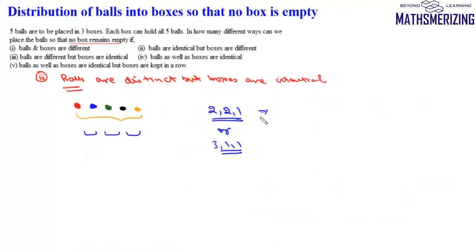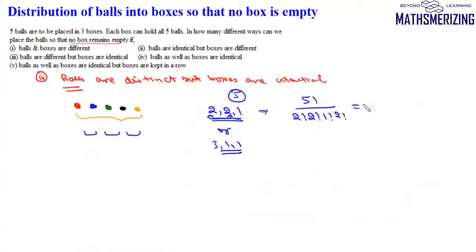This question is actually nothing but distribution of objects into identical groups. Now how do we distribute five objects in a group of 2, 2, and 1? We know that this can be done in 5! divided by (2! × 2! × 1!), and since we have these two equal-sized groups, we divide by 2!. So it will be 120 divided by 8, which is 15.